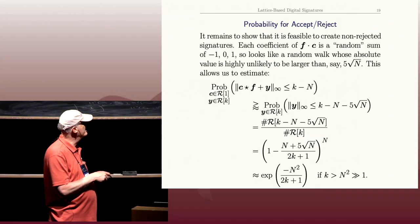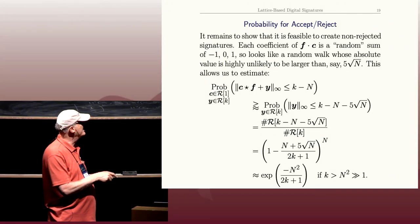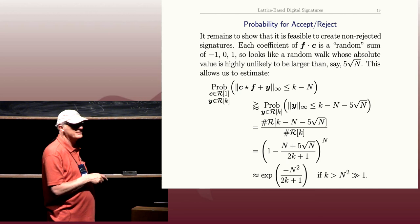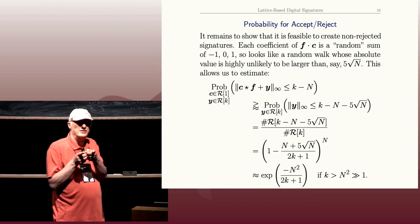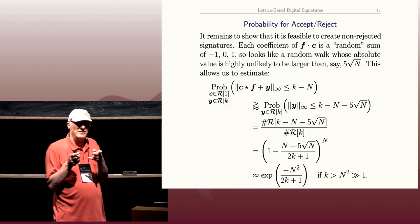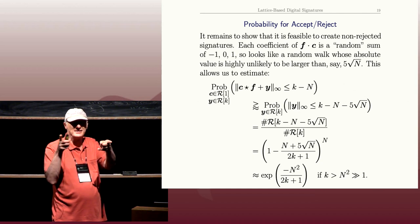And I can compute that as counting the number of good Ys versus all the Ys. How many polynomials have coefficients between minus K and K? Well, each coefficient has 2K plus 1 choices.